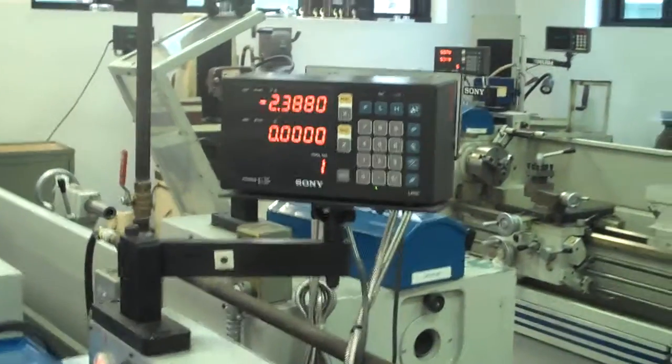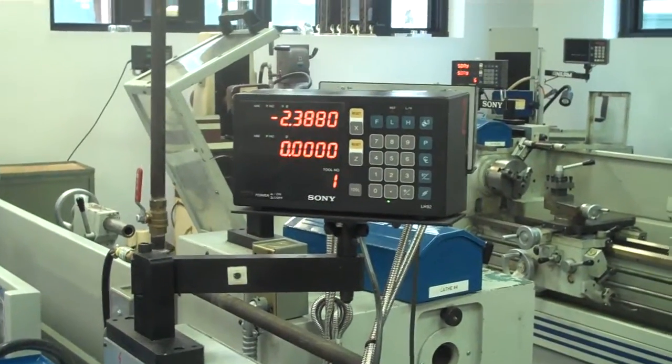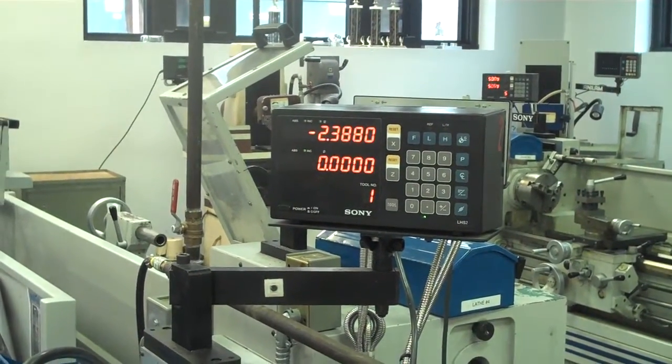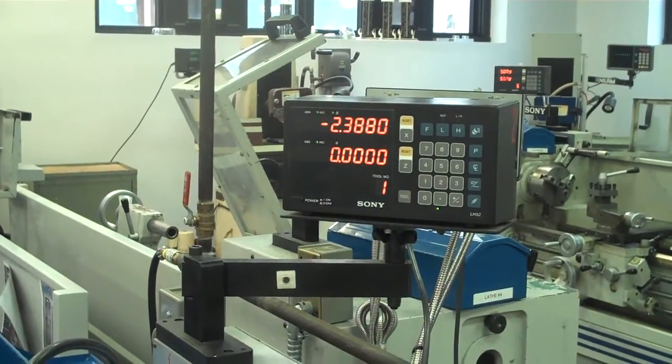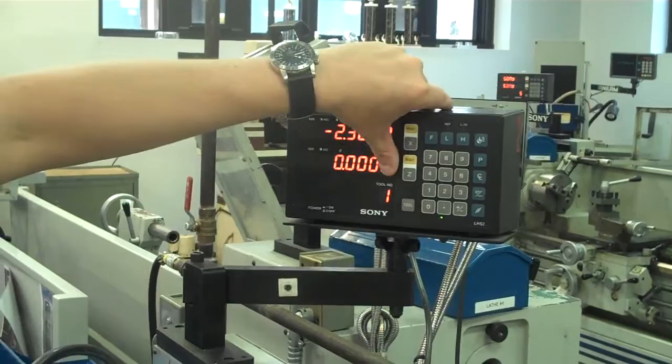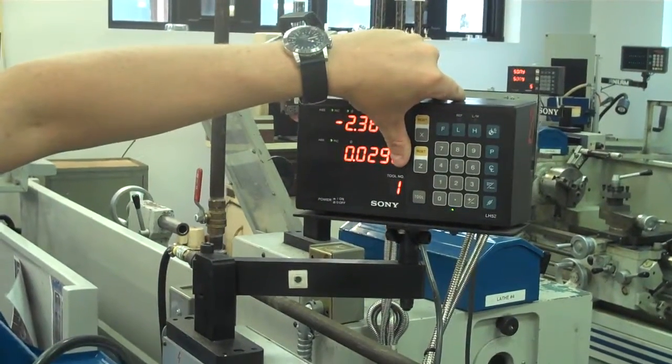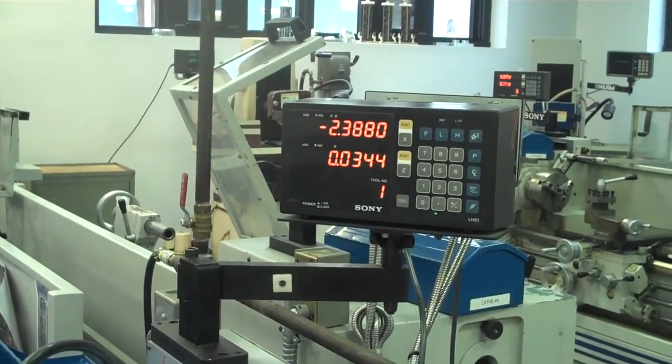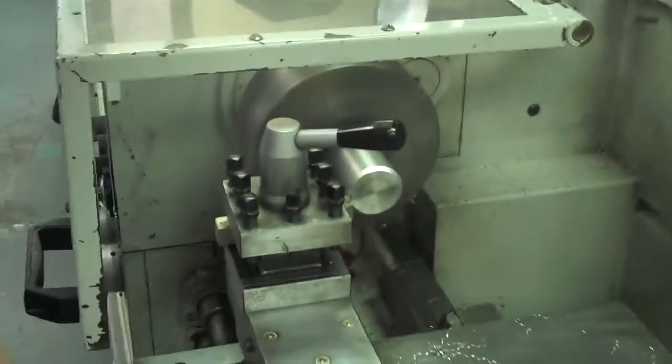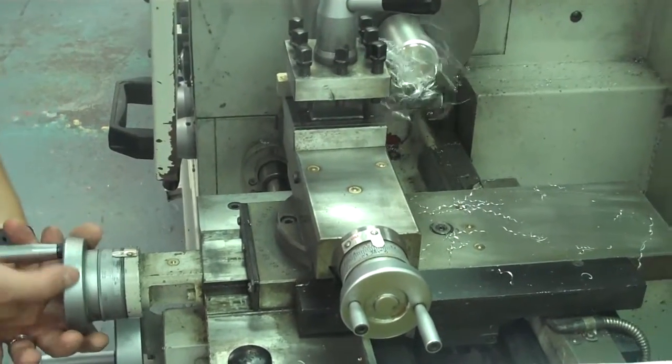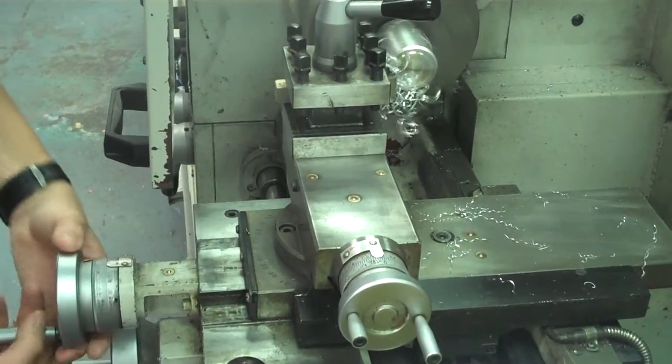So I'm going to zero that out, and I'm going to take off 45 thousandths. But I want to leave about 10 thousandths for my finish pass. So if I have 45 total to take off, I'm going to take off 35 right now, and then come back and take the last 10. So I'm going to go until it says 0.035. Okay, 0.0344, that's fine.